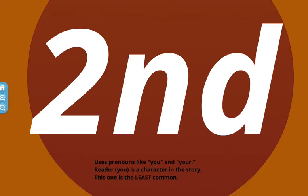Next we'll talk about second person. In second person you'll use words like you and your. That means you as the reader are actually going to be a character within the story. This one is the least common, but usually you'll see this in like a choose your own adventure novel. 'You're walking down the street. You see a scary house on the left. Do you want to keep walking or do you want to go inside?' And it'll tell you what page to turn to. That would be second person.